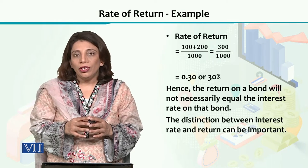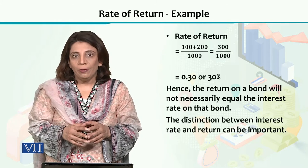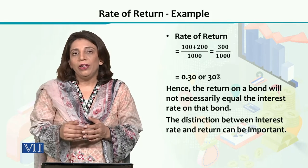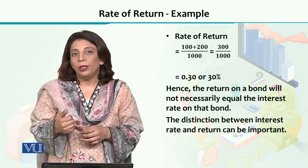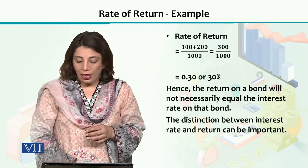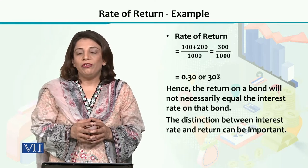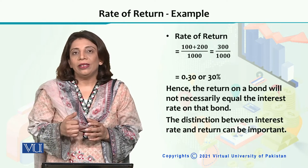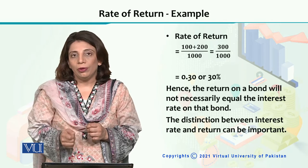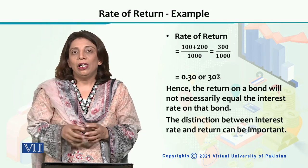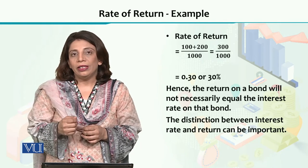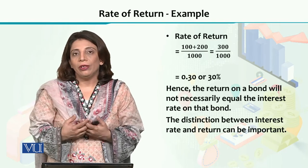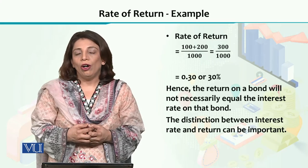So although the interest rate or coupon rate in this example was given as 10%, when we calculated the rate of return it turned out to be 30%. From this we can understand that the two concepts are different — the interest rate should not be assumed to be the same as the rate of return. We need to use the formula to find the rate of return, whereas interest rates are usually given by financial institutions or the central bank of a country.